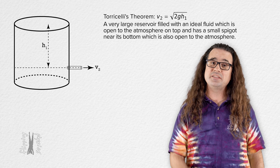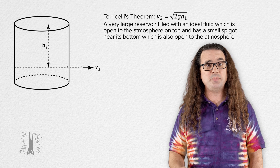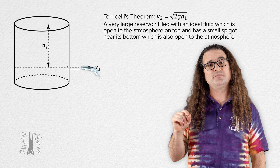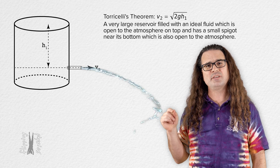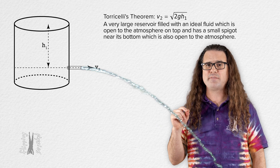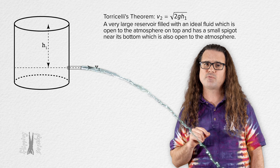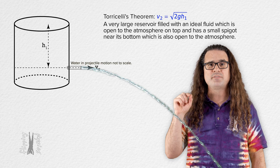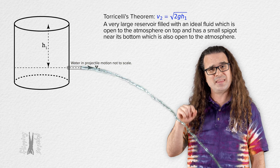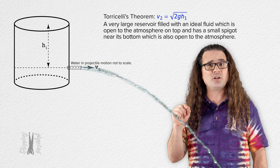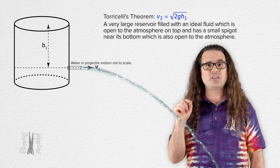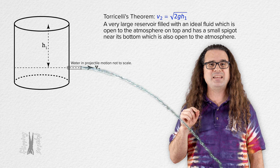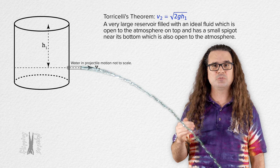Good morning. Torricelli's theorem says the speed of an ideal fluid flowing out of a small spigot from a very large reservoir equals the square root of two times gravitational field strength times the vertical height the top of the fluid is above the spigot.